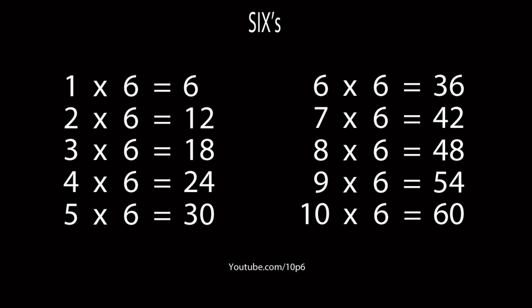6s. 1 6 is 6, 2 6s are 12, 3 6s are 18, 4 6s are 24, 5 6s are 30, 6 6s are 36, 7 6s are 42, 8 6s are 48, 9 6s are 54, and 10 6s are 60.